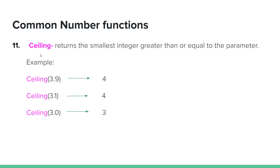CEILING returns the smallest integer greater than or equal to the parameter. So the ceiling of a value will return the smallest integer that is greater than or equal to the given number.